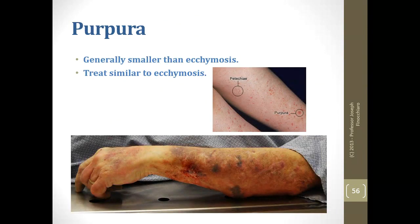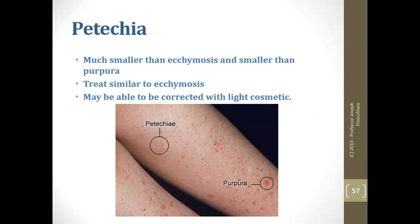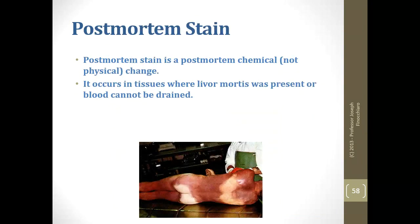Purpura are medium-sized discolorations. You have ecchymosis as the large bruises, purpura as mid-grade, and petechiae as the tiny ones. We treat everything similar to a bruise because it essentially is one. The smaller petechiae might just need a light cosmetic application. Post-mortem stain is a post-mortem chemical change — not physical — that occurs where livor mortis was present when blood wasn't removed in time.